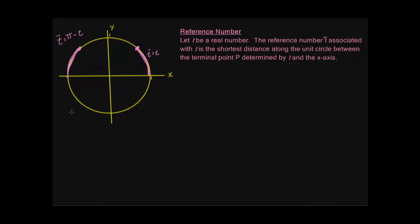In quadrant 3, if p is past π, the shortest distance goes backwards — so t-bar equals t minus π, meaning how much past π you've traveled. In quadrant 4, t-bar equals 2π minus t, because a full rotation is 2π and your t got you to that point, so the difference gives the remaining arc to the x-axis — just like in that last example.